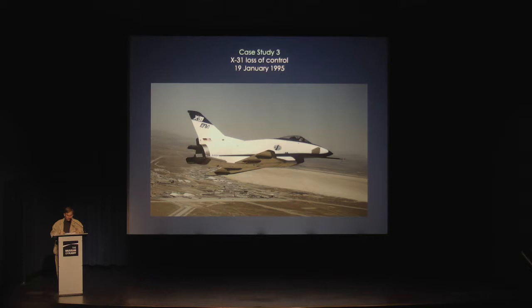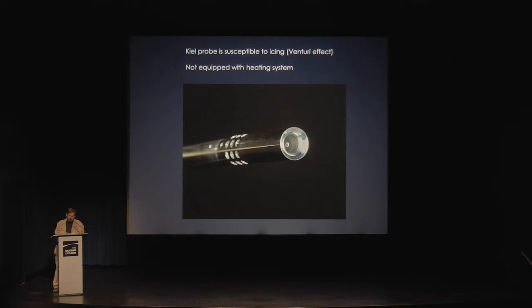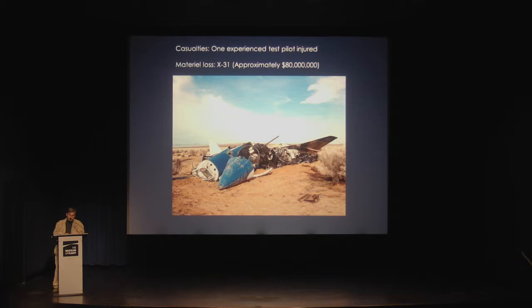In January 1995, this X-31 had completed its final test mission and the pilot was going through a pre-landing checklist when he noticed an airspeed anomaly. He correctly guessed that the problem was most likely the result of ice in the pitot tube. The pilot stated his intention to leave the pitot heat switch on rather than turn it off as called for on the checklist. The X-31 was equipped with a Kyle probe, which is highly susceptible to icing due to the Venturi effect. The Kyle probe is not equipped with a heating system, but mission rules stated that the X-31 would never be flown in icing conditions. Moments after the flight controller informed the pilot that pitot heat was not hooked up, the airplane departed controlled flight, forcing the pilot to eject.